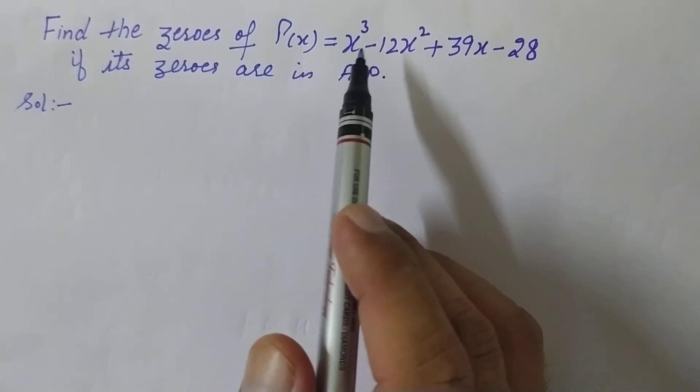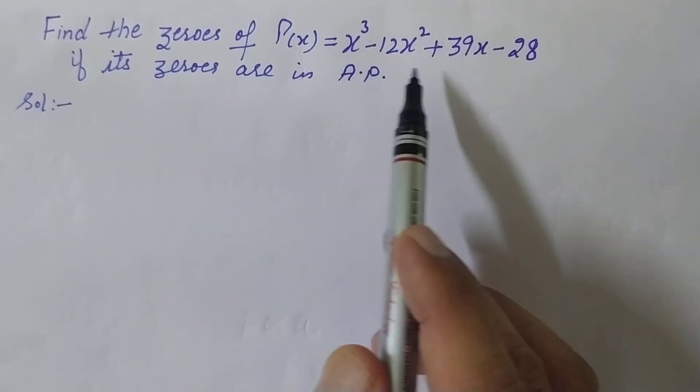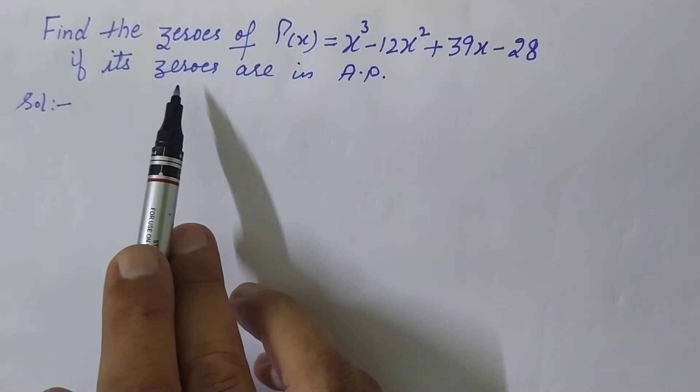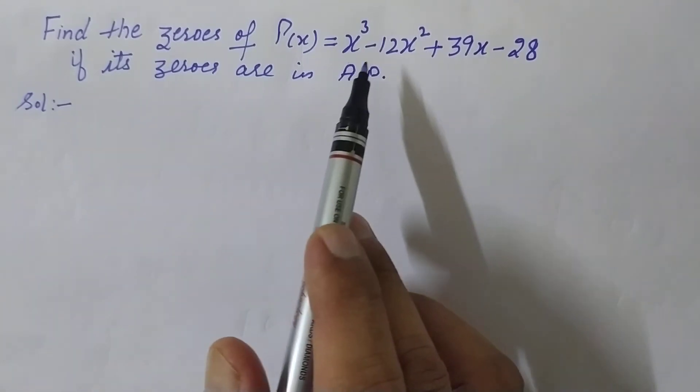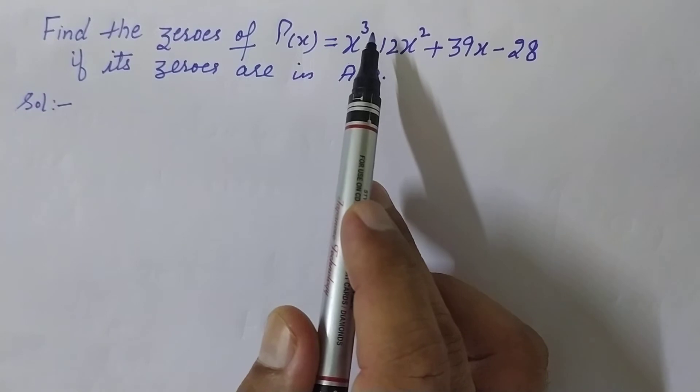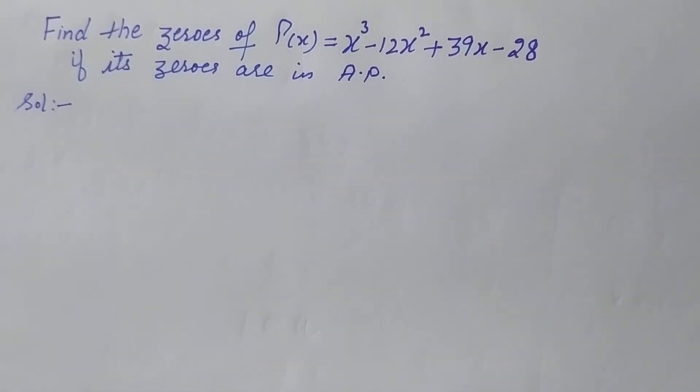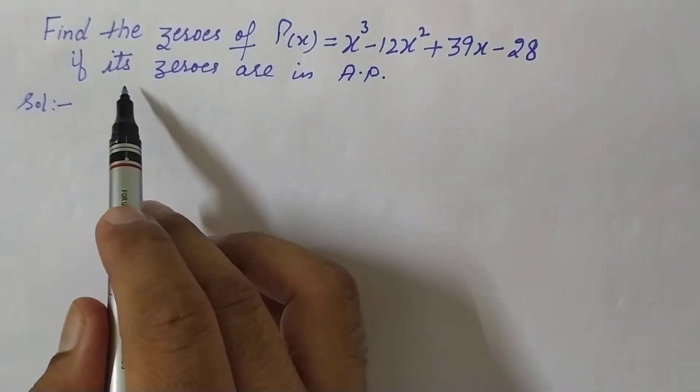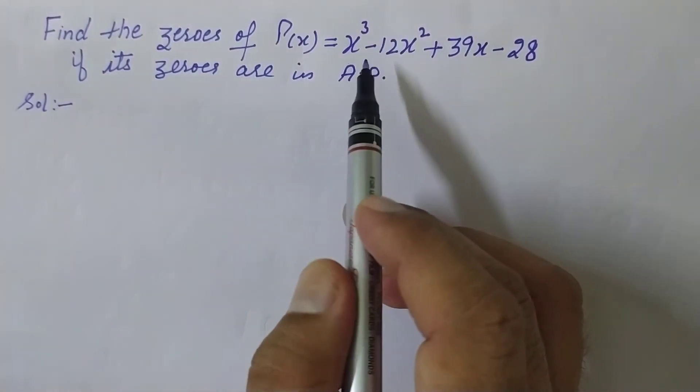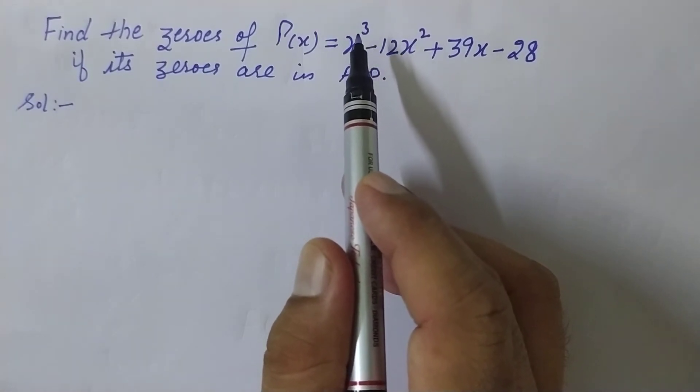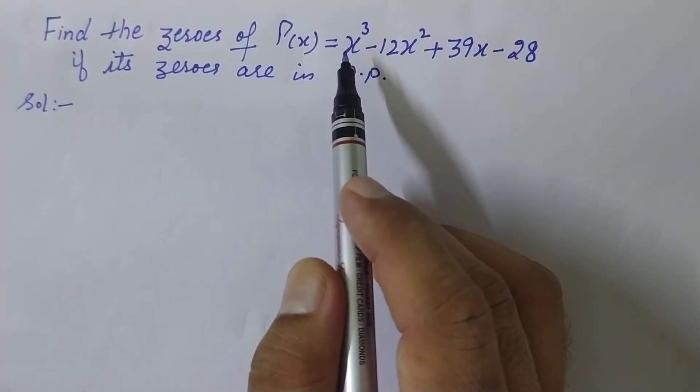In this question, this cubic polynomial is given and its zeros are in AP. So this question is a combination of chapter 2 polynomials and chapter 5 arithmetic progressions. What to do when these zeros are in AP? You know this is a cubic polynomial, so its degree is 3, and it has a maximum of 3 zeros.